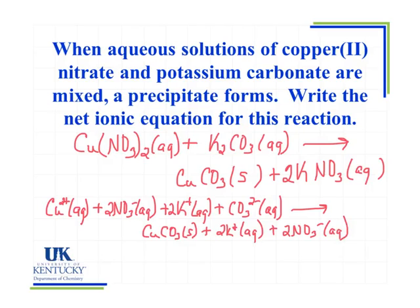I have my molecular equation, I have my complete ionic equation. Now what I want to do is look for things that are exactly the same on both sides—those spectator ions—and cancel them out. Copper goes from copper 2+ aqueous to copper in the copper carbonate compound, so that's not a spectator ion. Nitrate appears as aqueous nitrate ions on both sides, so I can mark them out. Likewise with potassium. Carbonate goes from aqueous ions into a solid compound.